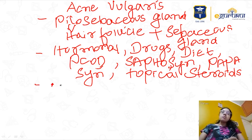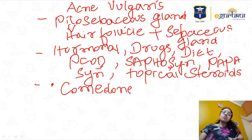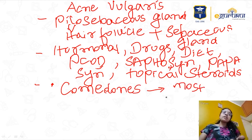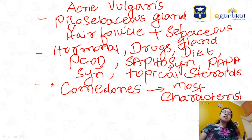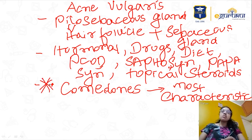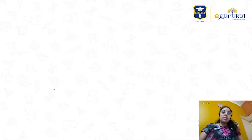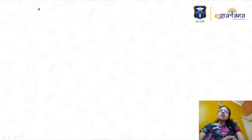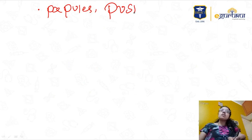The most characteristic lesion of acne is comedones — to call it acne, comedones should be present. Other types of lesions include papules, pustules, nodules, and cysts. Nodules and cysts indicate more severe forms of acne.